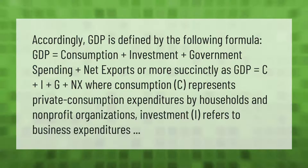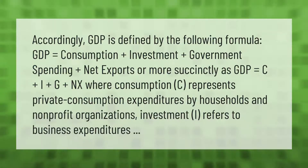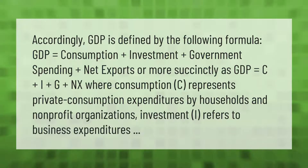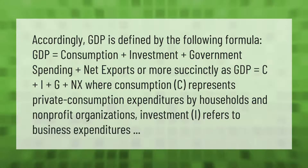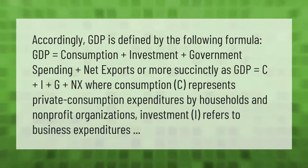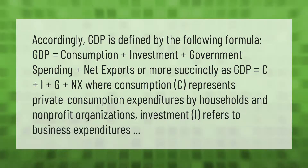GDP is defined by the following formula: GDP equals consumption plus investment plus government spending plus net exports, or more succinctly, GDP = C + I + G + NX. Consumption (C) represents private consumption expenditures by households and non-profit organizations. Investment (I) refers to business expenditures.